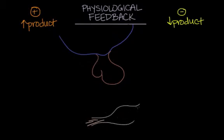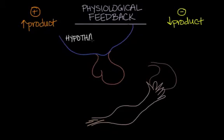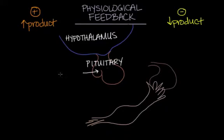Let's look at a physiological process that uses positive and negative feedback, and more specifically, occurs in females. The first structure, shown in blue, is called the hypothalamus. The hypothalamus is the master control gland of our endocrine system. It signals, or basically talks to, the next gland — the pituitary gland. The pituitary gland is further broken down into two lobes: the back lobe is the posterior, and the front lobe we'll focus on is the anterior pituitary.